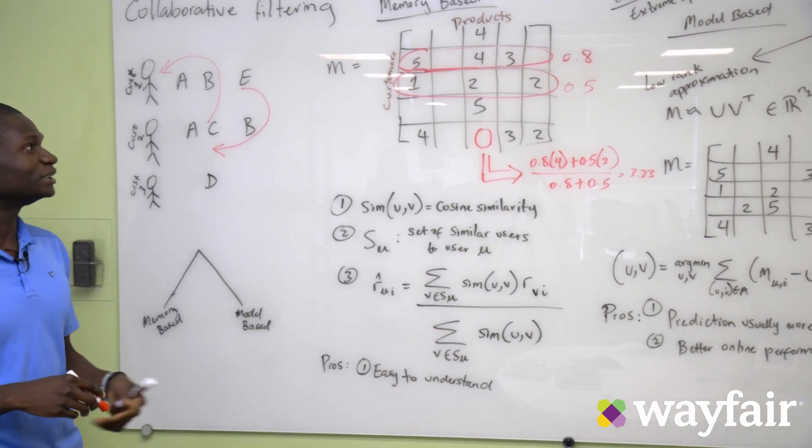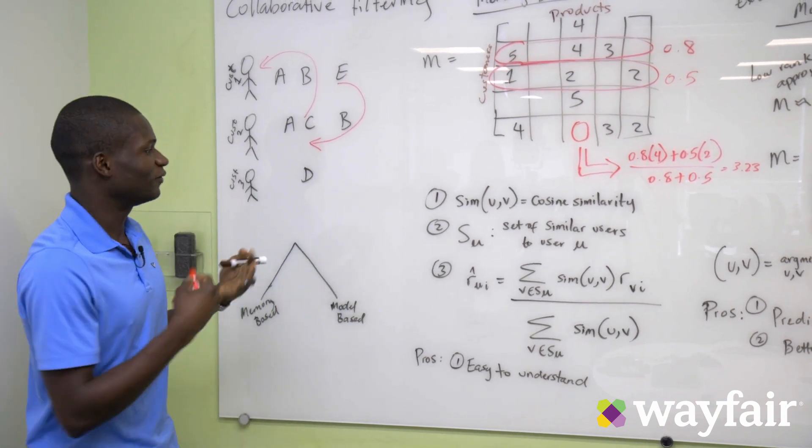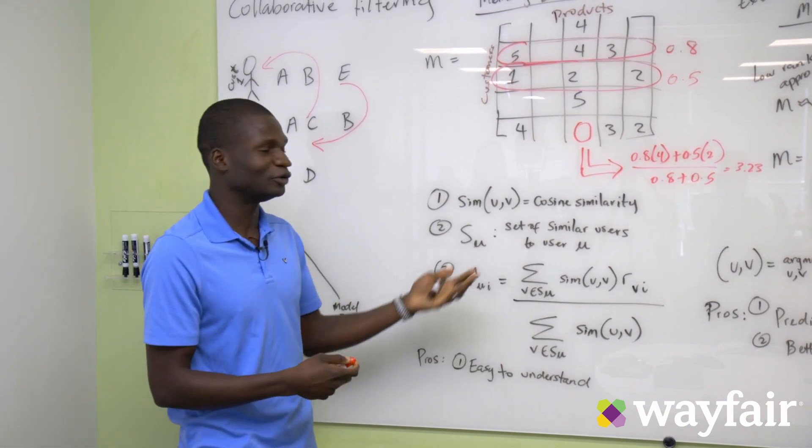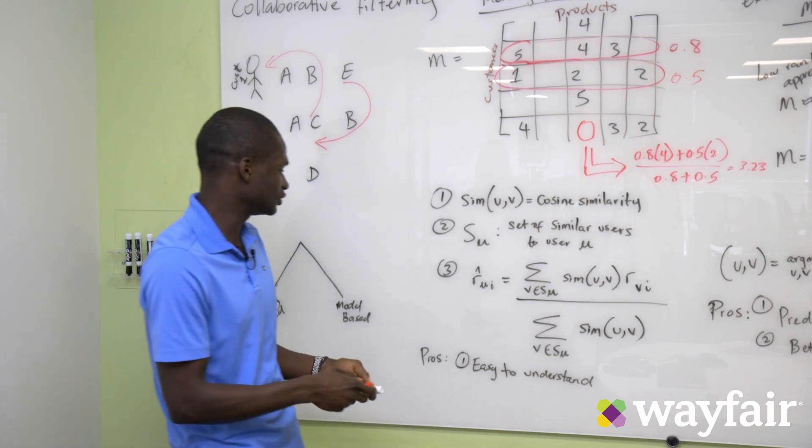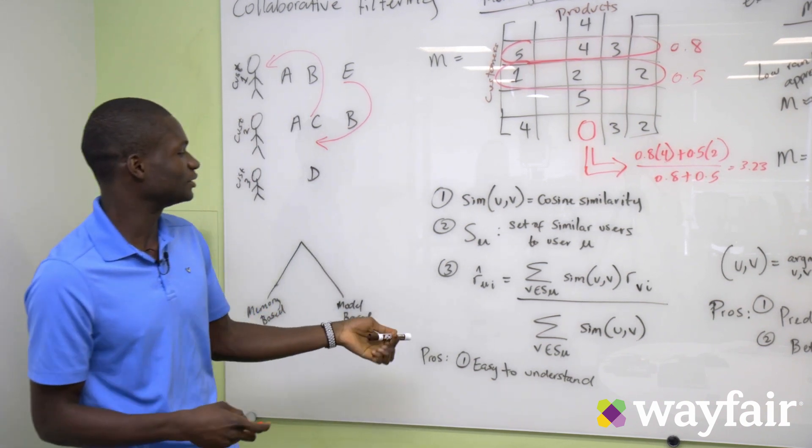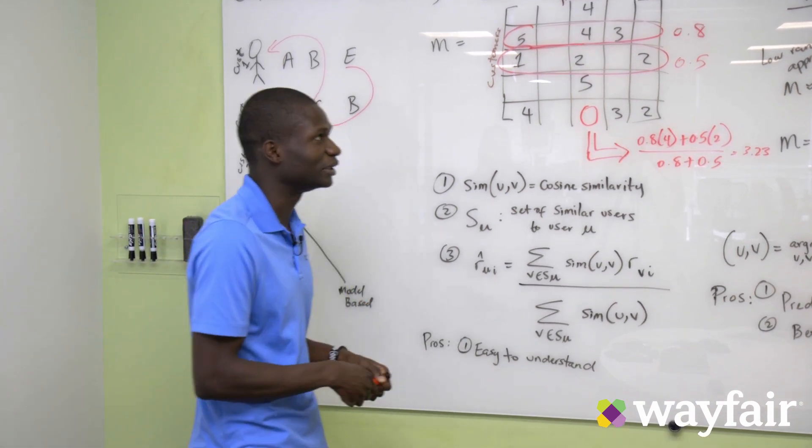The advantages of a memory-based approach is it's usually very easy to understand. We make a prediction for a user, we find the similar users to that customer. And then we can take some kind of weighted average of the ratings to get a final prediction.